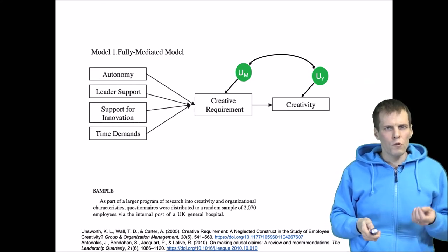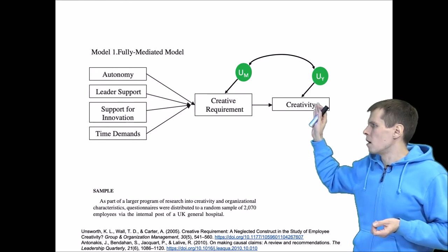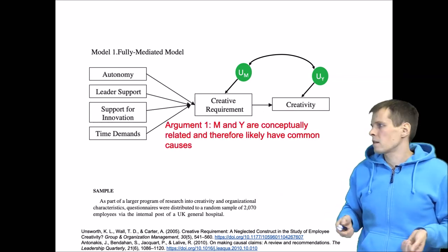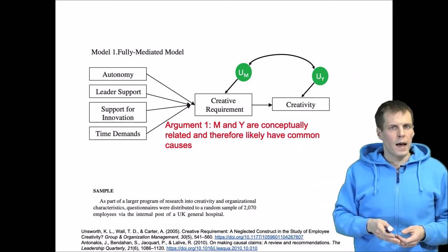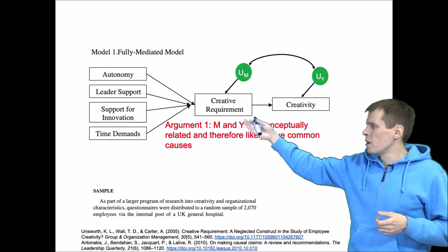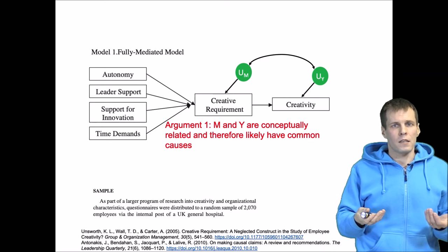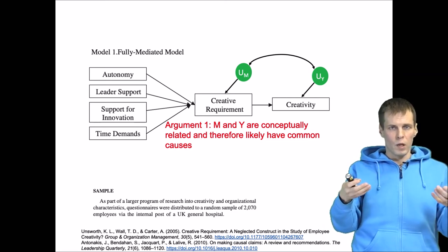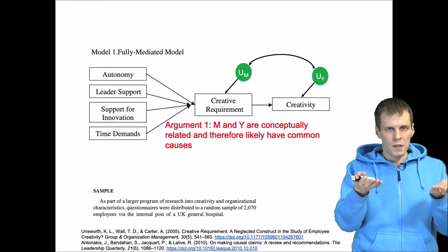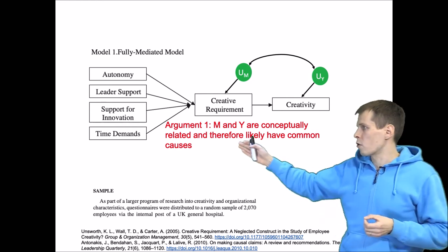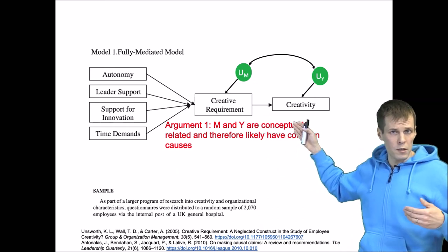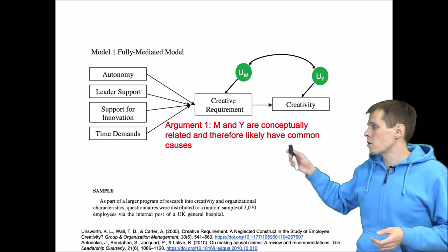There are two good arguments for why we should allow these error terms to be correlated when we are doing full mediation models. Argument number one is that M and Y are often conceptually related and therefore they probably have a common cause. If we think about creative requirement of a task or job and then creativity of an individual, perhaps those are both related to the overall level of creativity required in the organization. If the organization works in an environment where creativity is emphasized, then that may be a cause for creative requirement for individual tasks or jobs, and that could also cause the organization to hire creative people. There could be an omitted common cause because these are conceptually related.